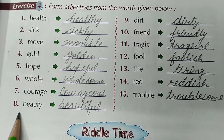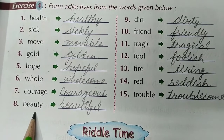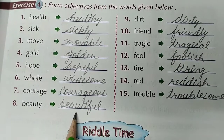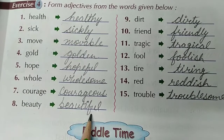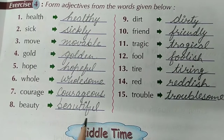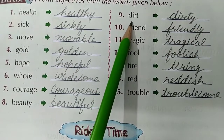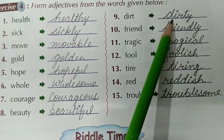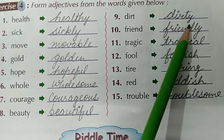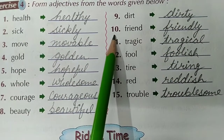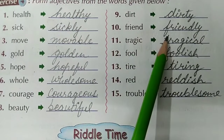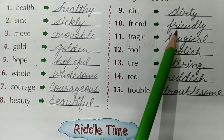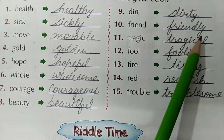Eighth is Beauty. The adjective form of Beauty is Beautiful — B-E-A-U-T-I-F-U-L. Beautiful. Ninth is Dirt. The adjective form of Dirt is Dirty — D-I-R-T-Y. Dirty. Tenth is Friend. The adjective form of Friend is Friendly — F-R-I-E-N-D-L-Y. Friendly.